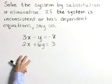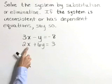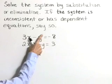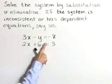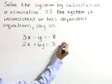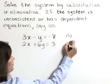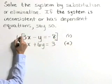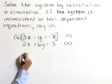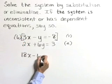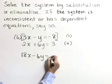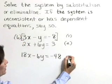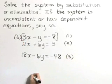I'm going to choose the elimination method for this system. I'm going to start by multiplying this first equation through by the number 6 so that I can add and eliminate the variable y. Let's call these equations number 1 and 2. Multiplying equation number 1 through by 6, it becomes 18x minus 6y is equal to negative 48. I'm going to identify it as equation number 3.